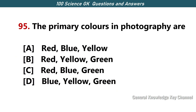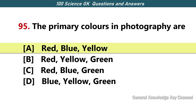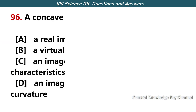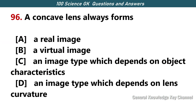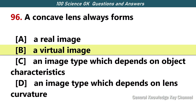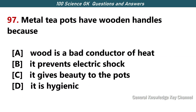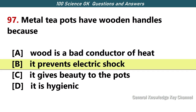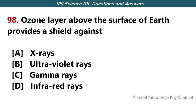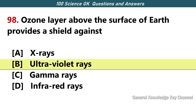The primary colors in photography are — Answer A — red, blue, yellow. A concave lens always forms — Answer B — a virtual image. The insulation on electrical wiring prevents electric shock. Ozone layer above the surface of the earth provides a shield against — Answer B — ultraviolet rays.